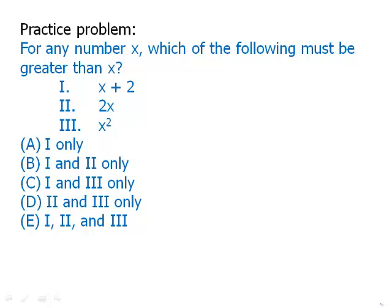So first of all, that first statement, that is legitimately true. That if we add 2, it doesn't matter whether the number is positive or negative, a fraction doesn't matter. If we add 2, we make it bigger. So that is always greater than x. And because 1 has to be included in the answer, we can eliminate answer D because that one doesn't include 1.